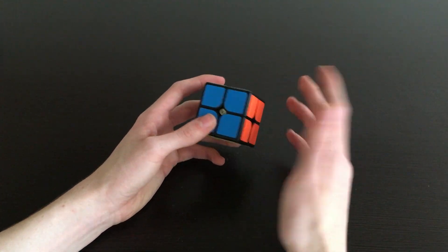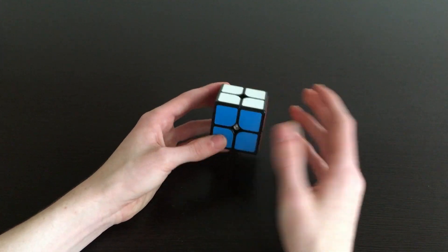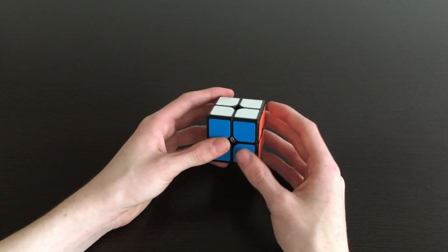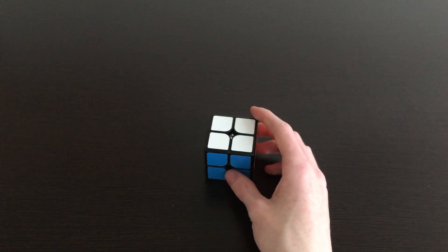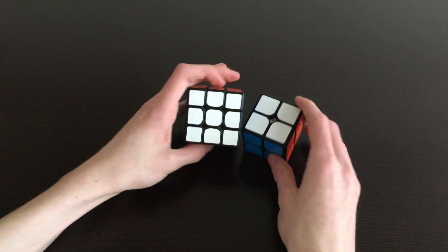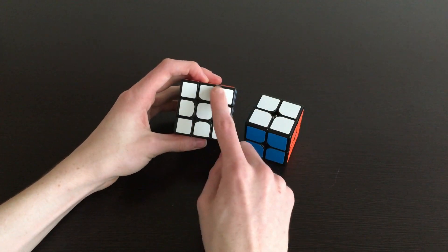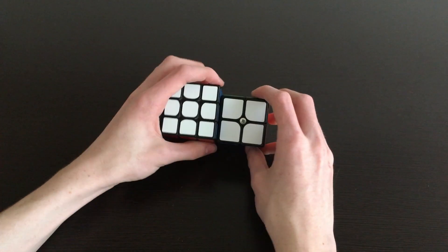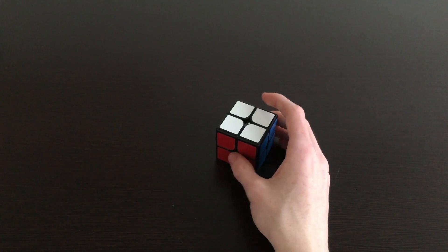Because you already know how to solve 3x3, it's pretty much going to be the exact same thing as a 3x3 except with corners. Take a look at a 3x3. We know this regularly what we'll have is a cross on white side. Well instead, all we're going to have is just the corners.